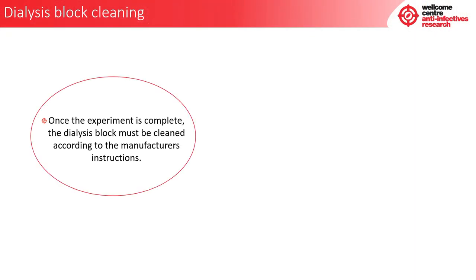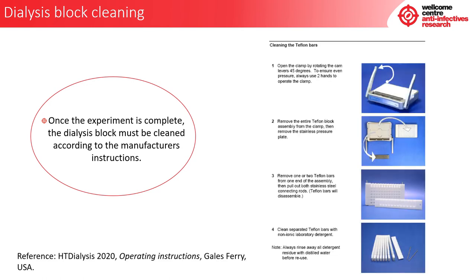Once the experiment is complete, the dialysis block must be cleaned according to the manufacturer's instructions. The instructions from HT Dialysis are as follows: open the clamp by rotating the cam levers 45 degrees — always use two hands to operate the clamp. Remove the entire Teflon block assembly from the clamp, then remove the stainless pressure plate. Remove one or two Teflon bars from one end of the assembly, then pull out both stainless steel connecting rods; the Teflon bars will then disassemble. Clean the separated Teflon bars with non-ionic laboratory detergent and always rinse away all detergent residue with distilled water before reuse.